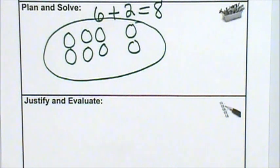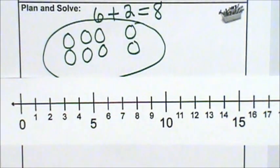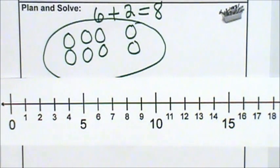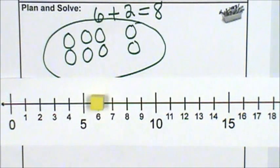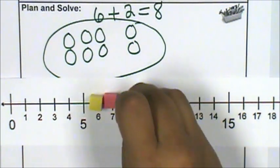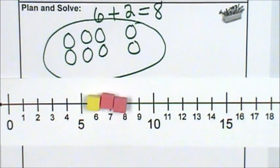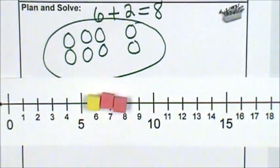Now I'm going to justify and evaluate my answer. I can verify my answer on a number line. There were six fish swimming, so here's my six fish. Two more joined them, one, two. My answer is correct, six plus two does equal eight.